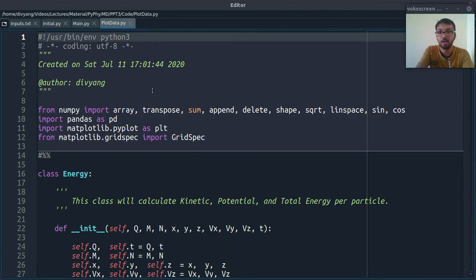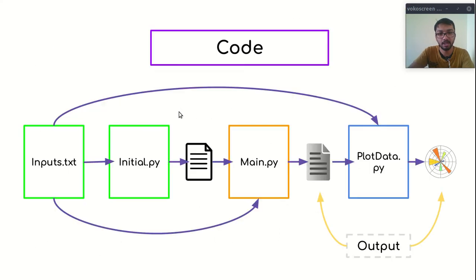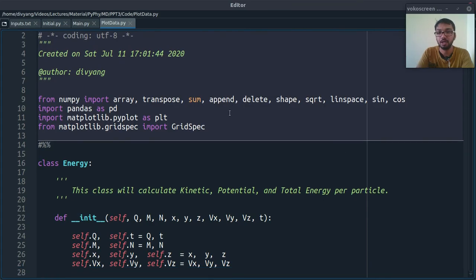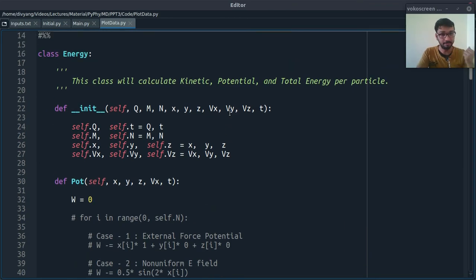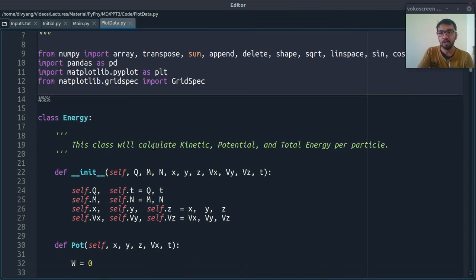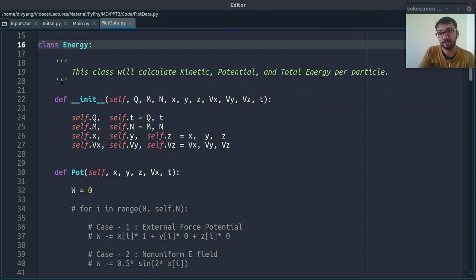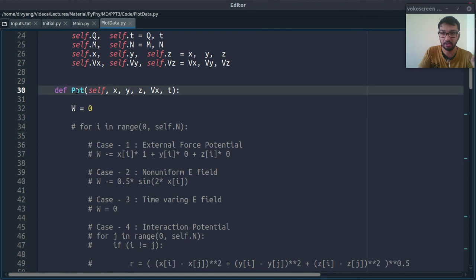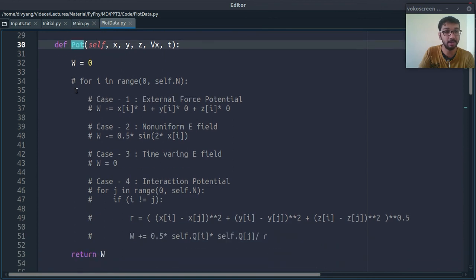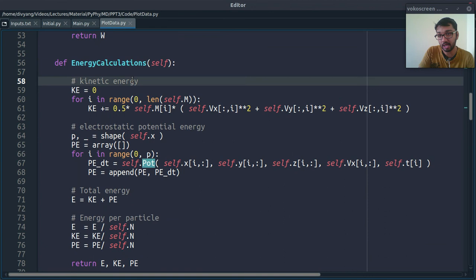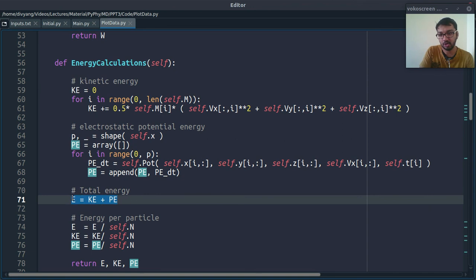Next is our plotting part, plot_data.py. So, in this part, I am first calculating or keeping track of energy of the system. This class energy will calculate potential energy of the system at time T. It will also calculate kinetic energy at that time. And, of course, we can calculate total energy of the system, as we have kinetic energy and potential energy.